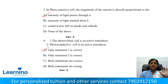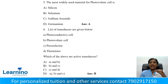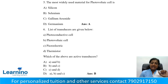Question number 5: The most widely used material for a photovoltaic cell. Options: A — silicon, B — selenium, C — gallium arsenide, D — germanium. Option A, silicon, is the correct answer.